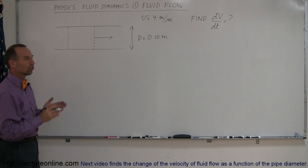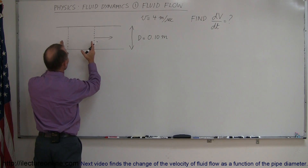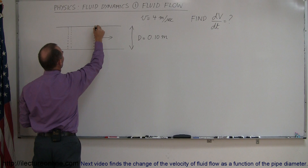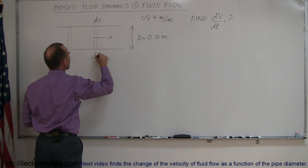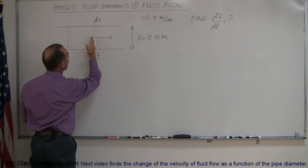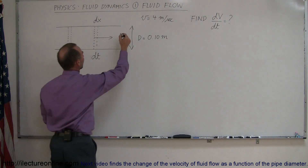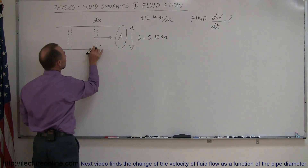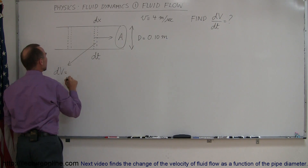Now imagine that a small amount of time goes by. Take a section of the flow right here. In a small amount of time dt, the fluid flows to the right just a little bit, displacing itself by a small amount dx. We can then calculate the volume of fluid that has moved from one position to the other — the volume of that section, which has a cross-sectional area A.